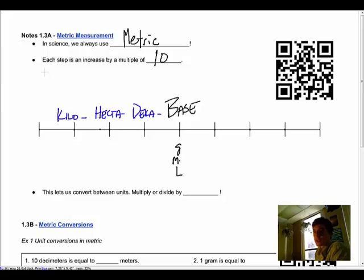Going the other way, getting smaller, we have deci in the tenth spot, so one-tenth of a gram is a decigram. And then we have centi—you've seen centimeters before—so this is one-hundredth of a meter. And then milli. Same thing, you've seen millimeters and you've used milliliters, so these are one-thousandth of whatever your base unit is.